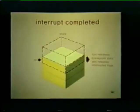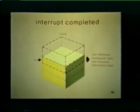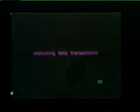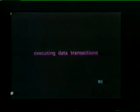Once the tape unit's interrupt has been serviced, the CPU retrieves the breakpoint data from the stack. This data will tell the CPU what it was doing when interrupted so it can pick up where it left off. That completes our discussion of interrupt execution. Now let's see how the bus is used when data transactions are executed.